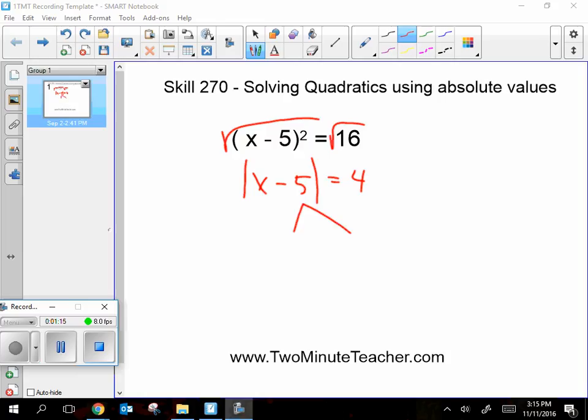You might want to go watch the video for absolute values if you need to. This is x minus 5 is equal to 4, and x minus 5 is equal to negative 4.